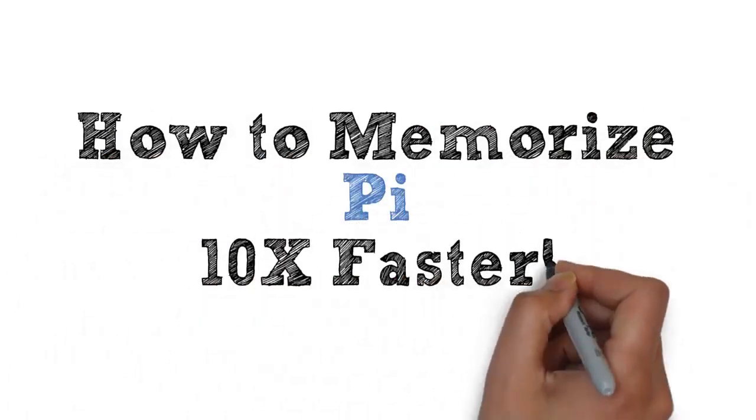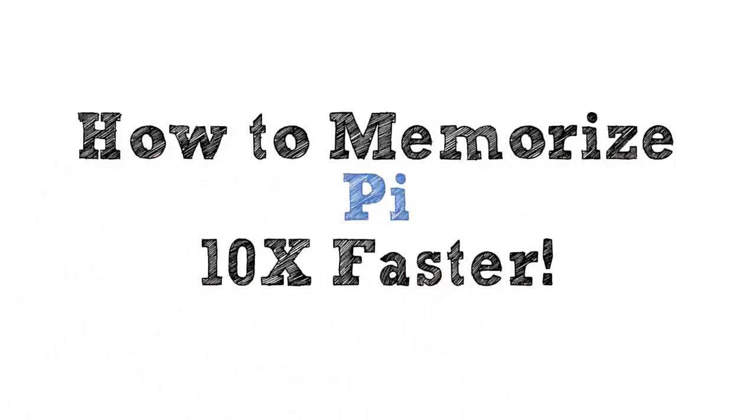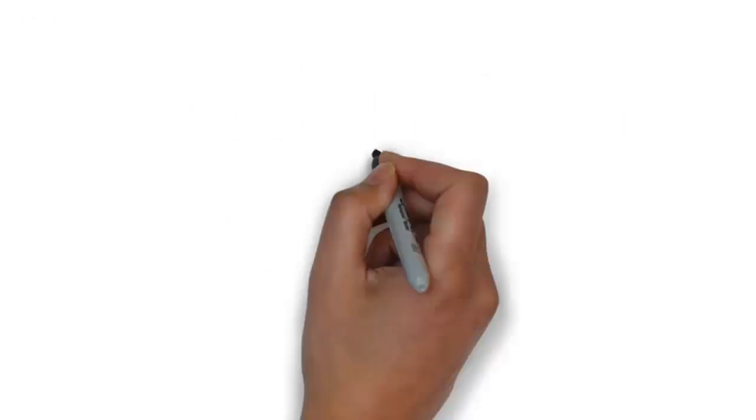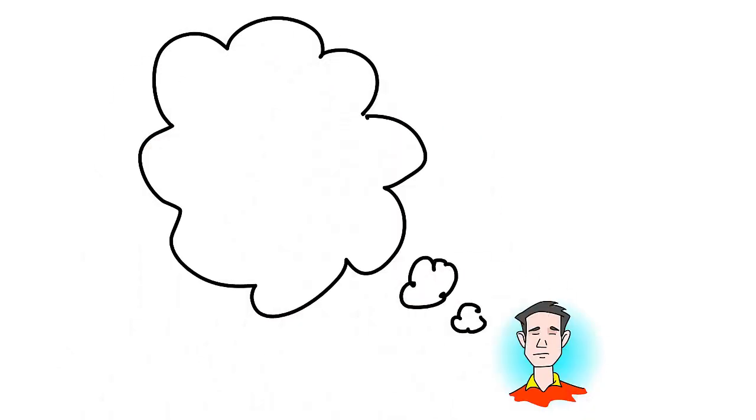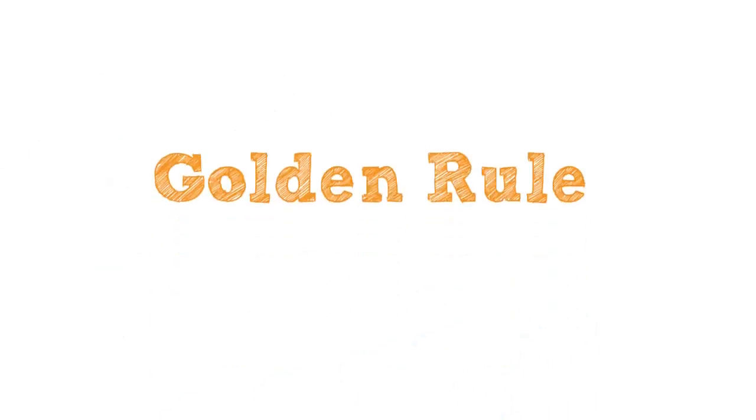To memorize Pi ten times faster than you ever thought possible, you need to do what memory experts do and use your visual memory. In this video, I'm going to make you memorize Pi to 20 decimals by showing you what to picture in your mind and connecting all the pictures together using a crazy story.